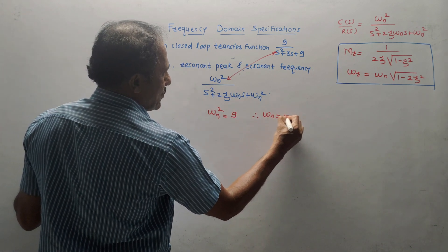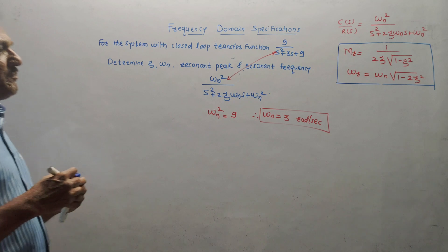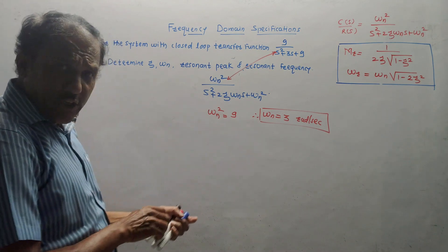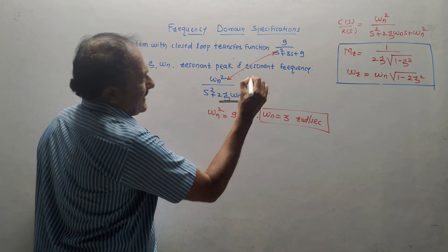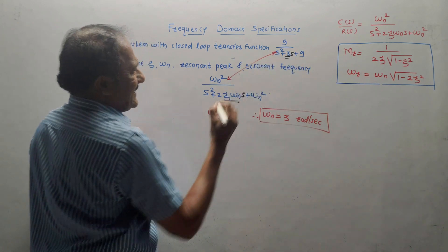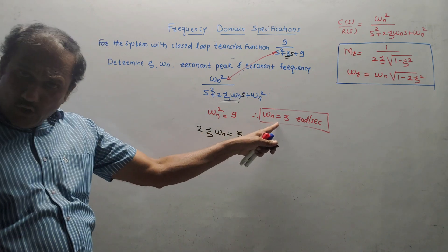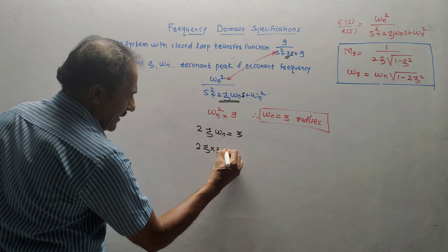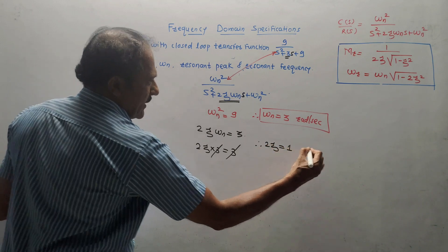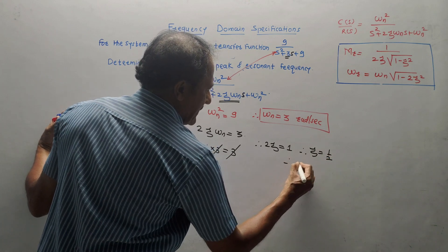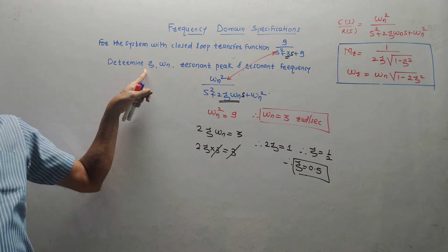Immediately we can say the numerator term is ωn² which equals 9, therefore ωn equals 3 radians per second. Next, to calculate zeta: look at the middle term — 2ζωn into s. Here the coefficient of s is 3, so 2ζωn = 3. Putting the value of ωn: 2ζ × 3 = 3, so 2ζ = 1, therefore ζ = 1/2 = 0.5. So we have calculated the first two parts, zeta and omega n.